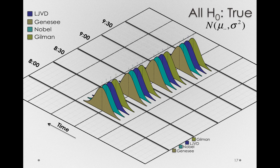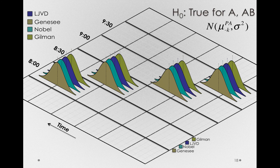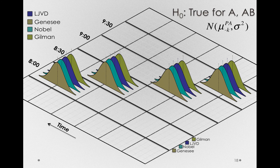Let's see a situation where the null hypothesis is true for our A factor (routes) and for the AB interaction, but there is a statistically significant time of day effect. Here are those distributions. Notice the notation: we're representing normal distributions with the purely additive mean because we have no interaction, and we only need one subscript — the k subscript for the B factor. The only thing distinguishing these populations is the time of day, but again, equal variance.